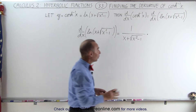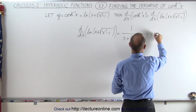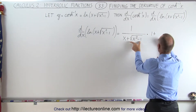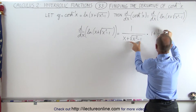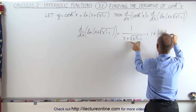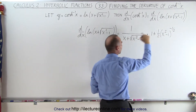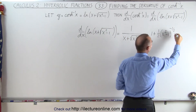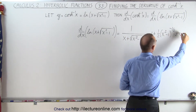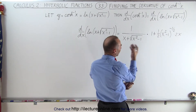The derivative of that inner expression will be 1 plus the derivative of the square root term, which is one-half times the quantity x squared minus 1 to the negative one-half power, times the derivative of what's inside the radical, which is 2x.